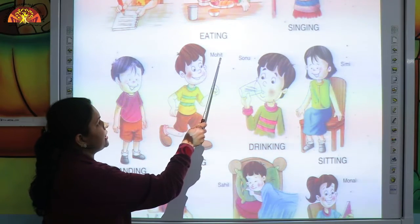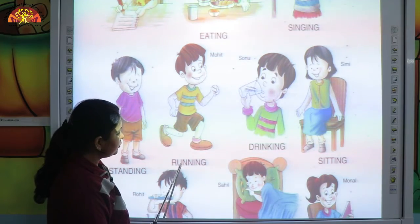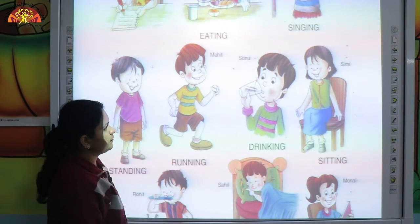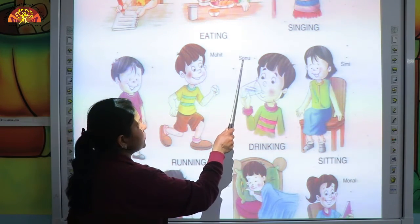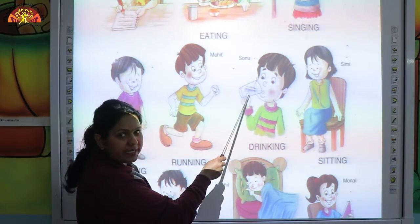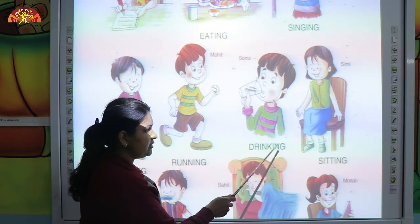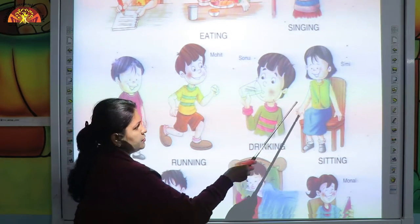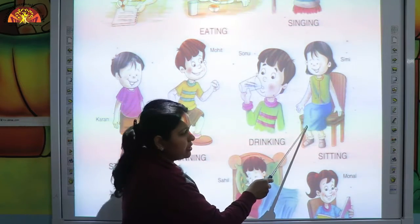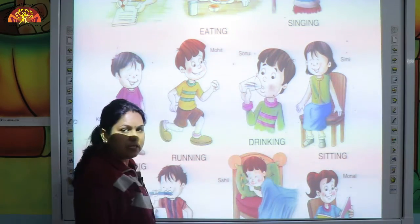This is Mohit. Mohit is running — R-U-N-N-I-N-G, running. This is Sonu. Sonu is drinking — D-R-I-N-K-I-N-G, drinking. This is Simi. Simi is sitting — S-I-T-T-I-N-G, sitting.